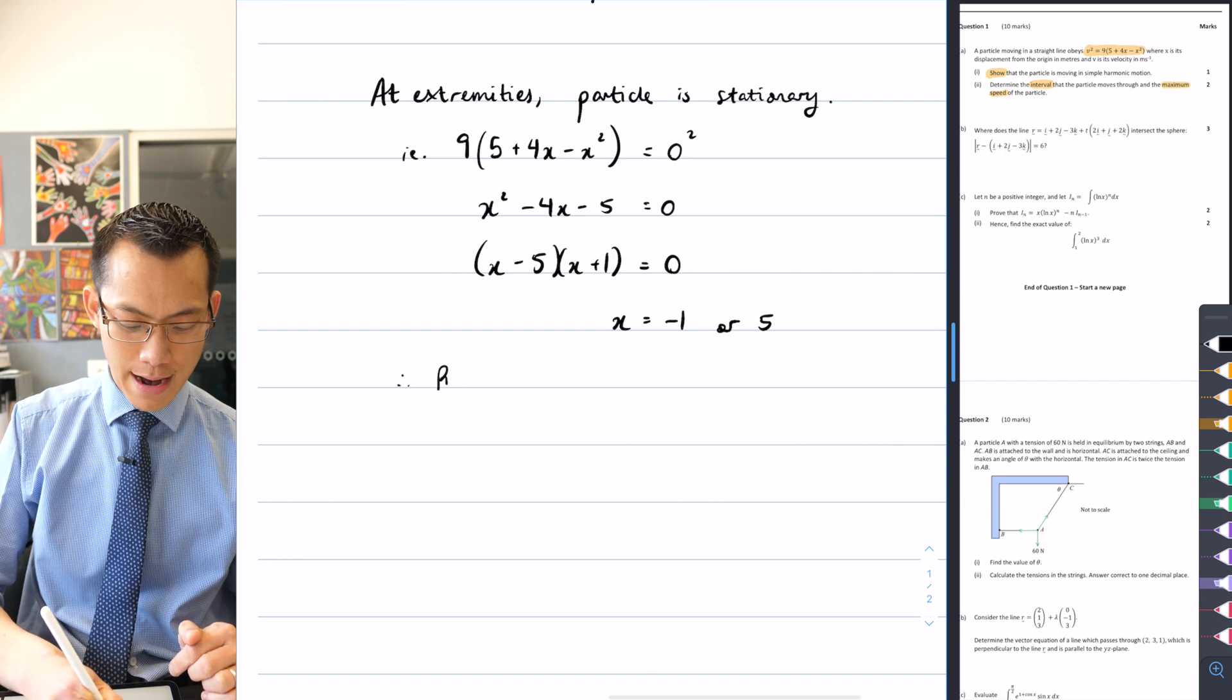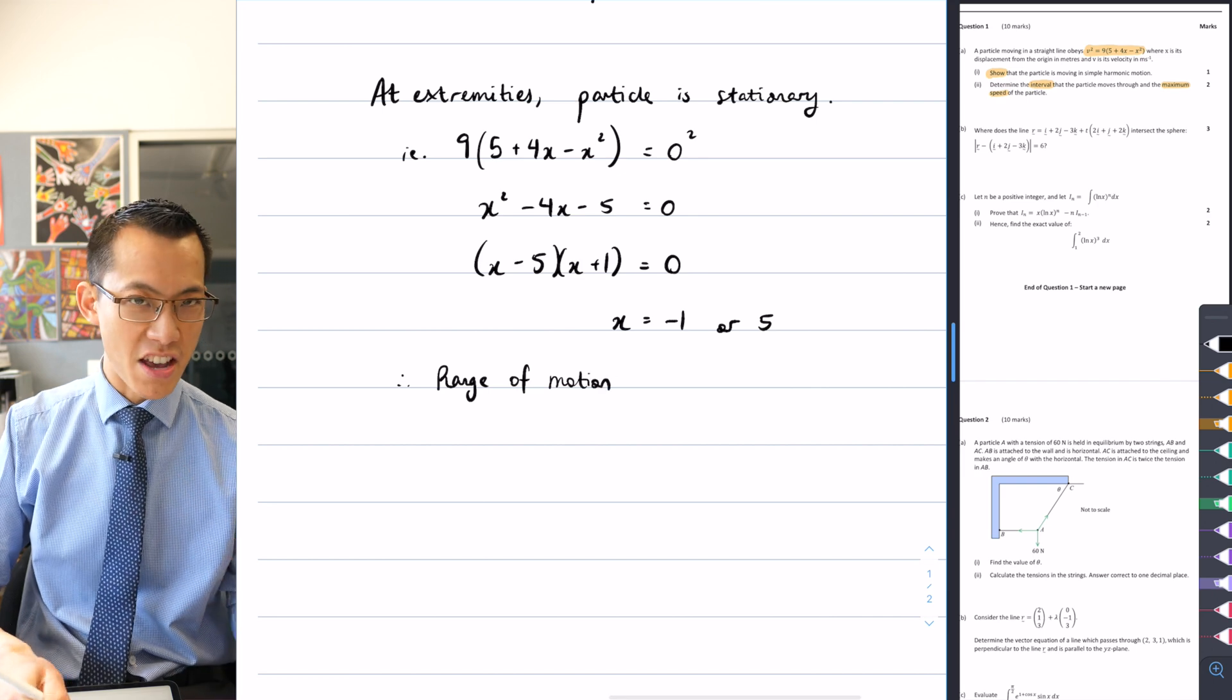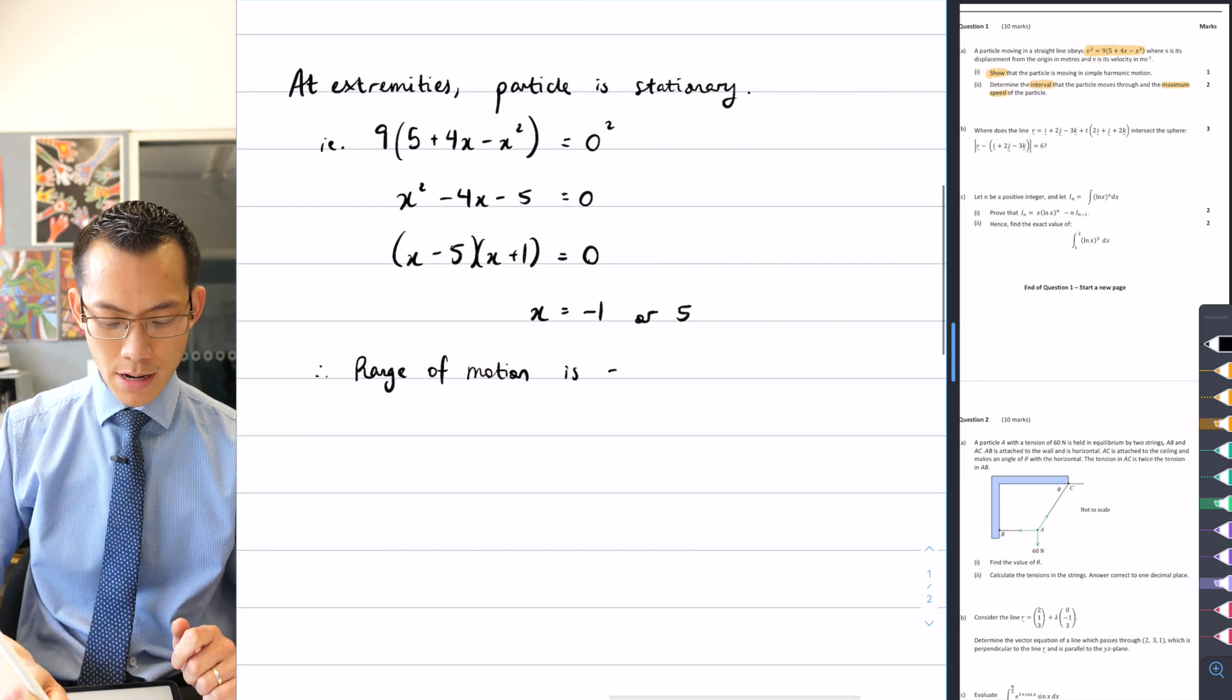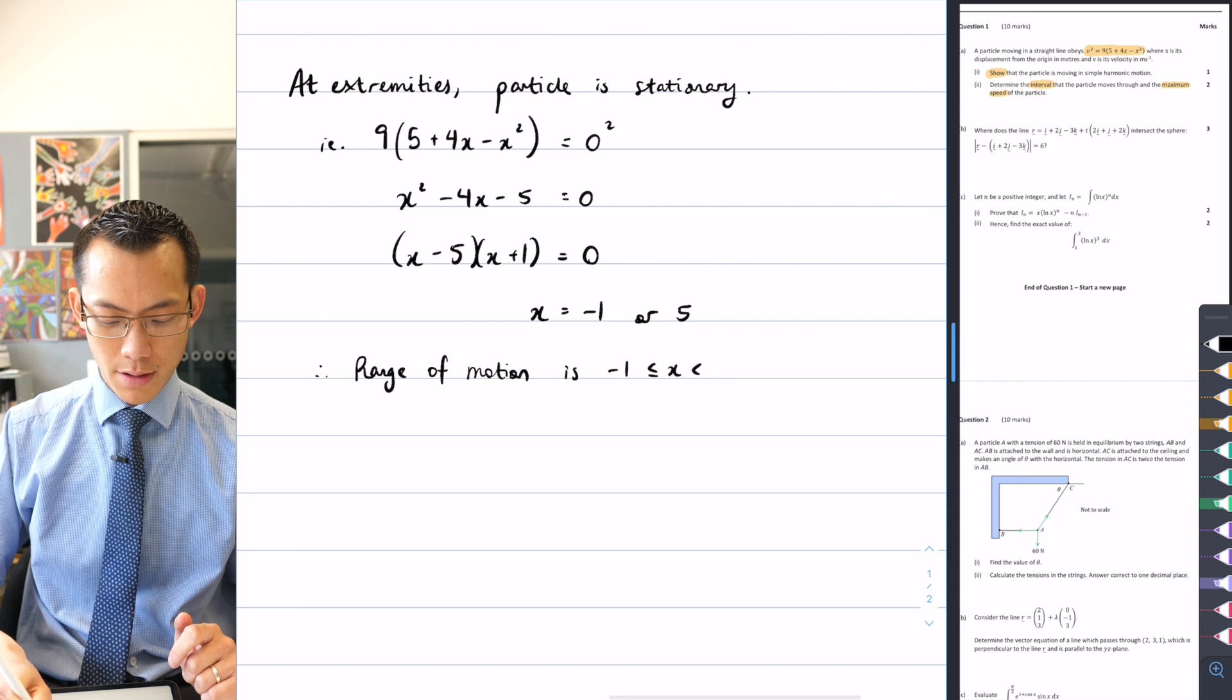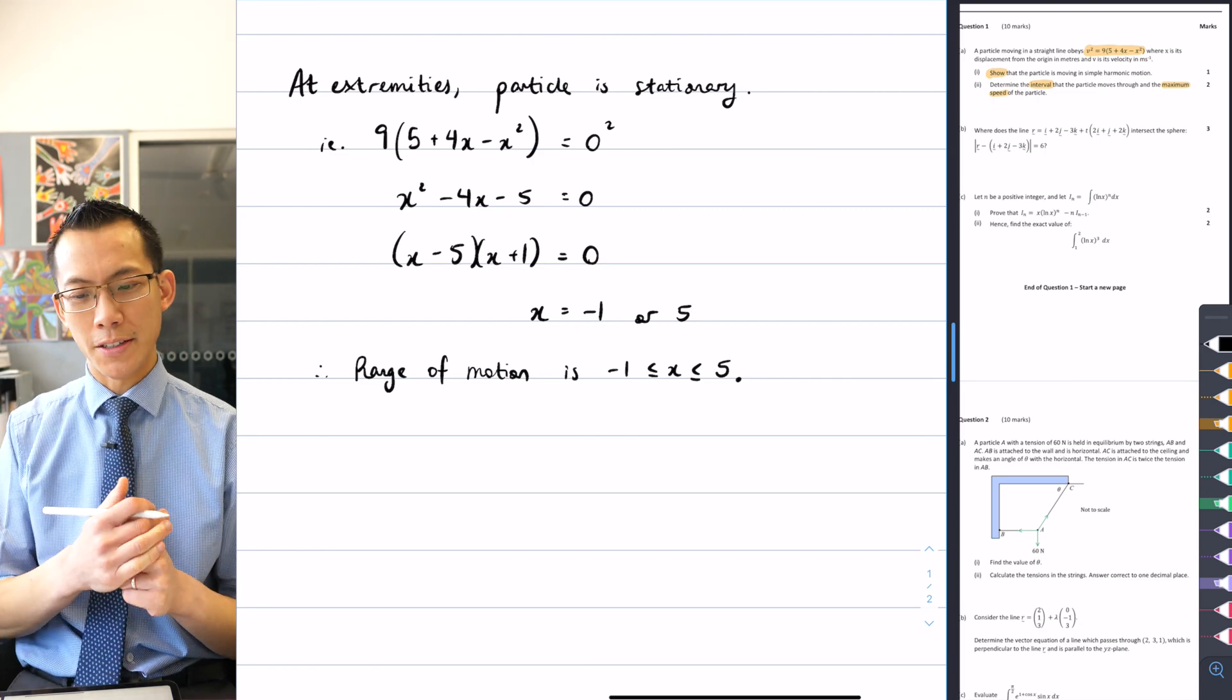So therefore, range of motion is, or the interval, they're saying the same thing, is negative one to five. Done. And I suppose you could use interval notation here if you wanted.